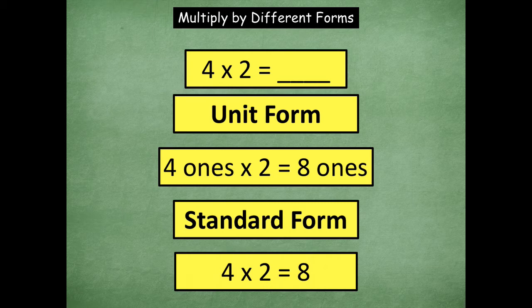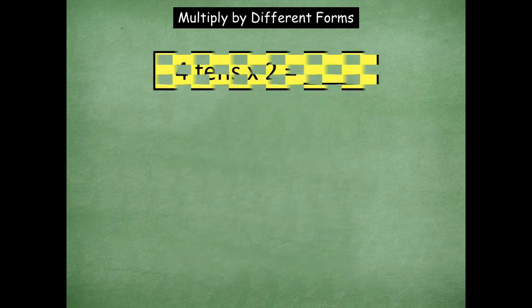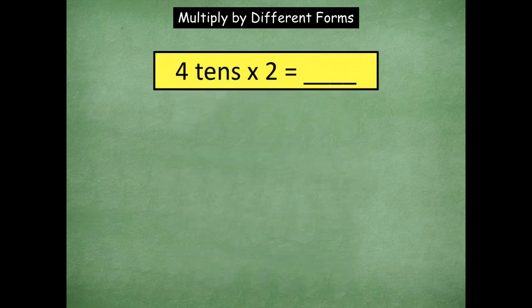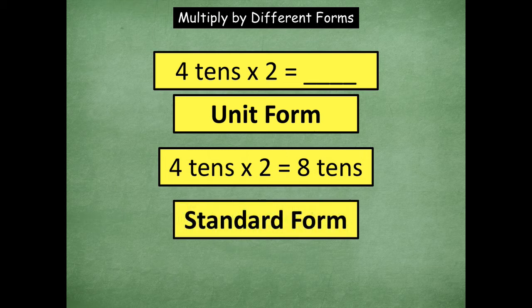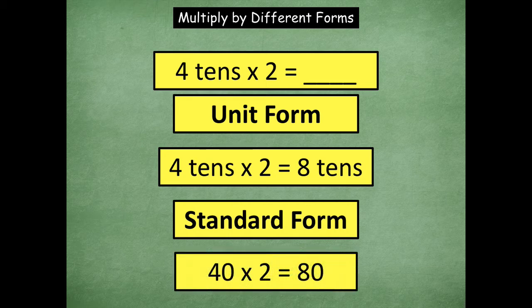Those ones are a little easier, but when they get into the tens it's a bit trickier. Now we're doing four tens times two. The unit form of four tens times two is four tens times two equals eight tens, because four times two is eight and it's in the unit of tens. In standard form, four tens is 40, so 40 times two gives you those eight tens, which is 80.